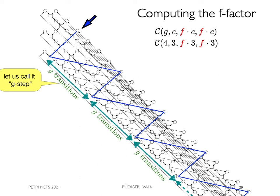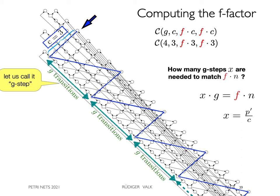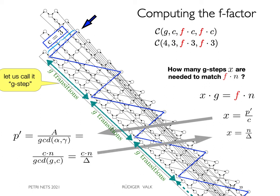Now we ask, how many g-steps x are needed to match f times n? Since such a subsequence contains c transitions, the answer is x equals p' divided by c. With our result for the length p' equals c times n divided by delta of a co-process, we obtain x equals n divided by delta and f is g divided by delta.